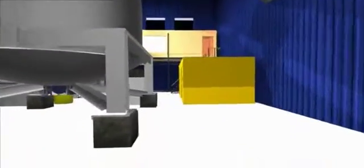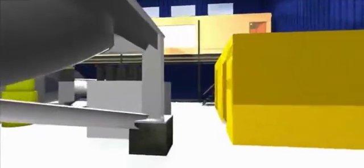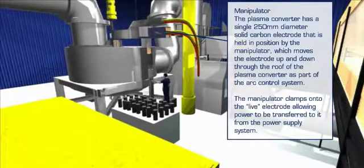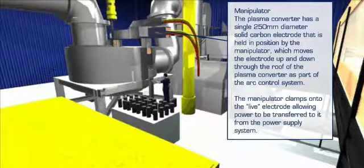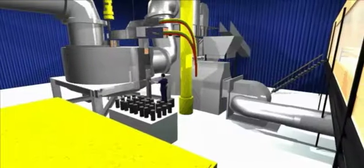We're now going round the back of the plasma converter to view the electrode manipulation area. The plasma converter has a single 250 mm diameter solid carbon electrode held in position by the manipulator, which moves the electrode up and down through the roof of the plasma converter as part of the arc control system. The manipulator clamps onto the live electrode allowing power to be transferred to it from the power supply system. As the system operates as a continuous 24-hour, 7-day process, additional electrodes need to be attached without interruption. An electrode jointer is used to screw 1 metre long new electrodes onto the live electrode while the system remains in operation.